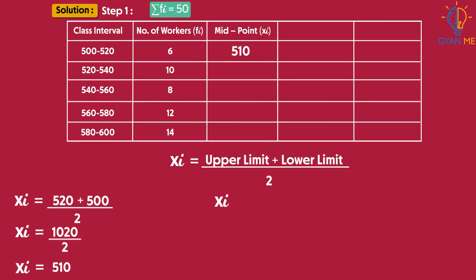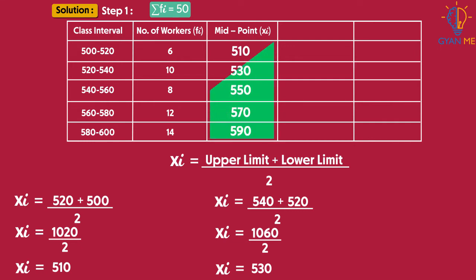Similarly, for the second class, lower limit is 520 and upper limit is 540. Add them and divide by 2 to get 530. You can calculate the midpoint or class mark of all other classes using the same formula. Now let us list all these values of xi in the next column.